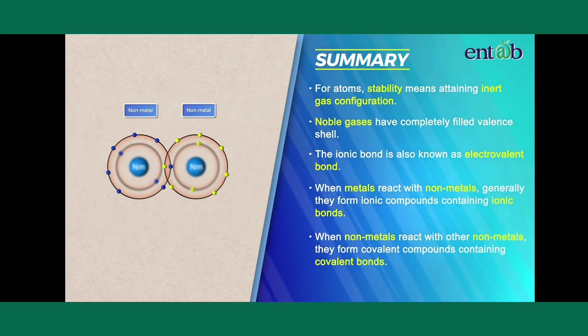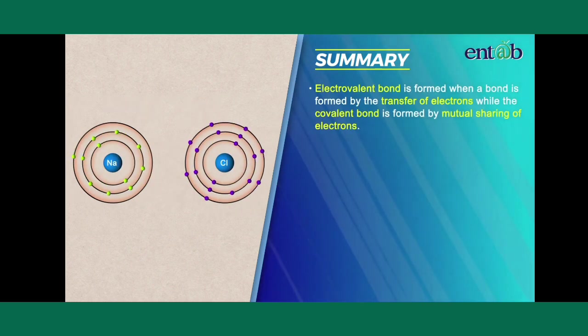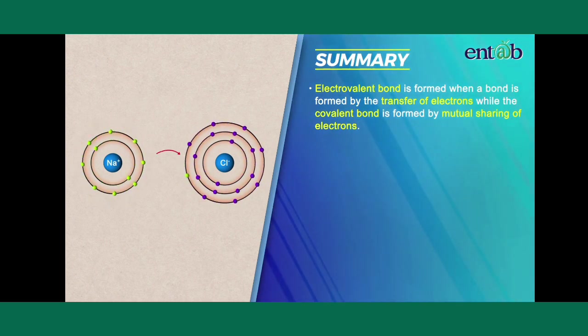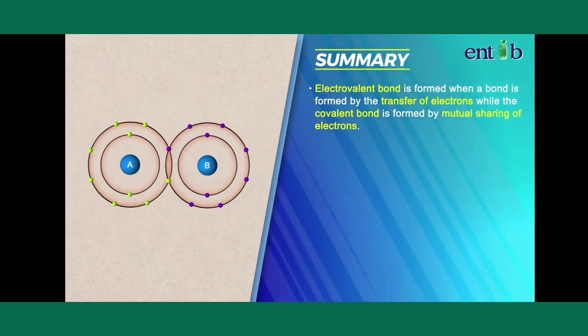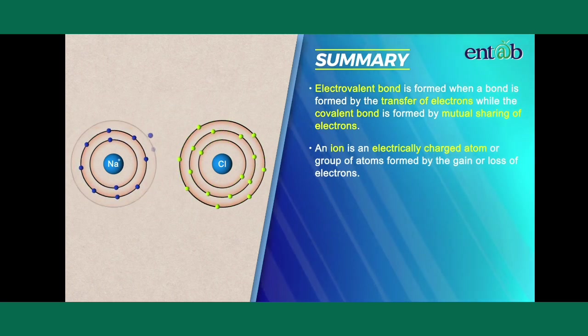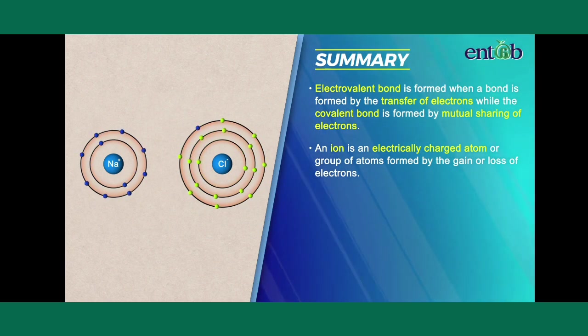When non-metals react with other non-metals, they form covalent compounds containing covalent bonds. Electrovalent bond is formed by the transfer of electrons while a covalent bond is formed by the mutual sharing of electrons.